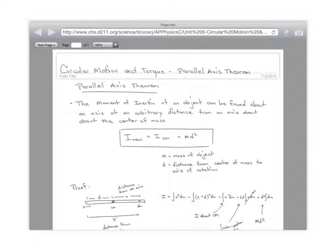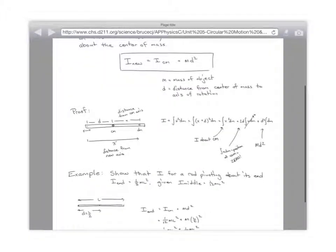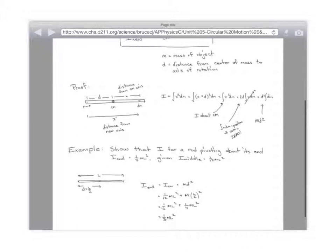So, I have a little proof here, which I don't know how important it is for you to know, but if you're curious. There it is. Actually, I'm going to skip and just give you a chance to work, but I do want to point this one out. Show that the moment of inertia for a rod pivoting about its end, show that it's one-third ml squared if you're given that the moment of inertia about the middle is one-twelfth ml squared. Which we didn't derive yesterday, but we probably should have.